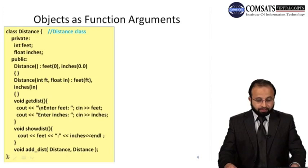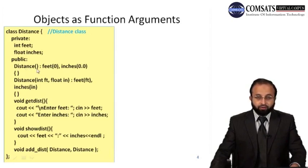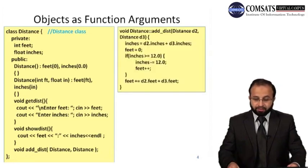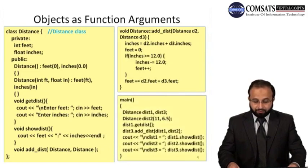This is the distance class we saw in our last lecture. It has two private data members: feet and inches. This is the default constructor with no argument, and this is the constructor with two arguments. The addDistance function prototype is written within the class definition, but the definition of addDistance is provided outside the class definition. This is our main function — we already know these things.